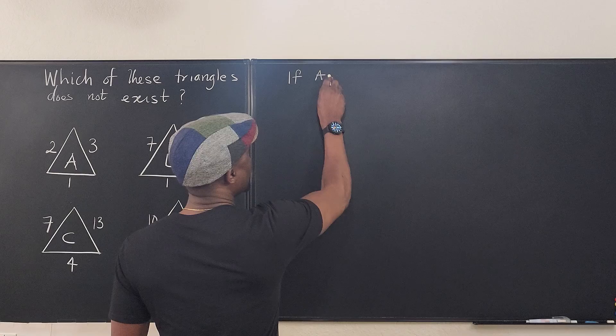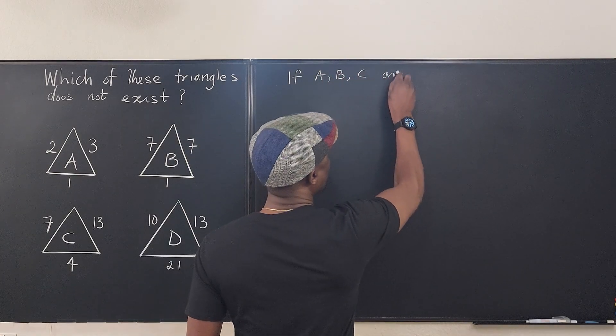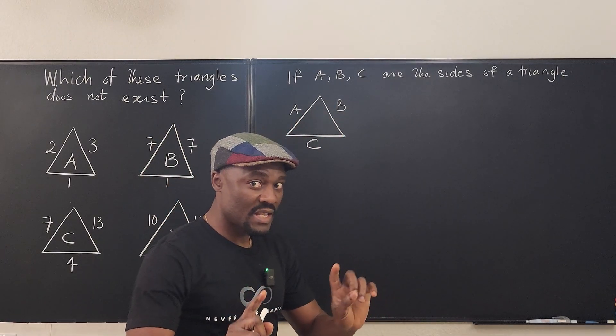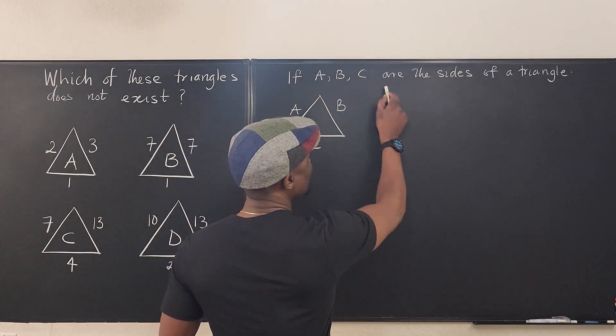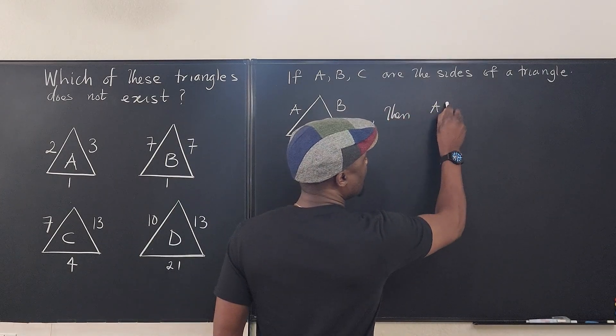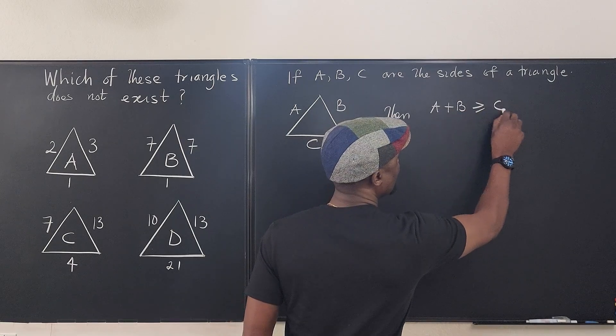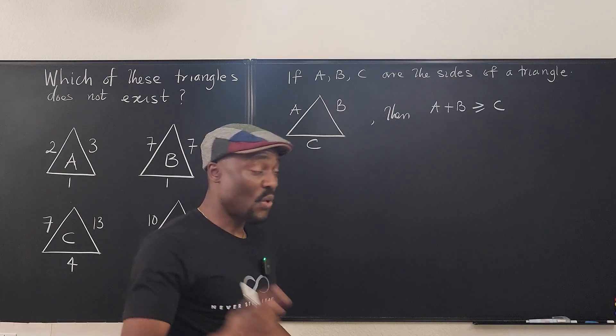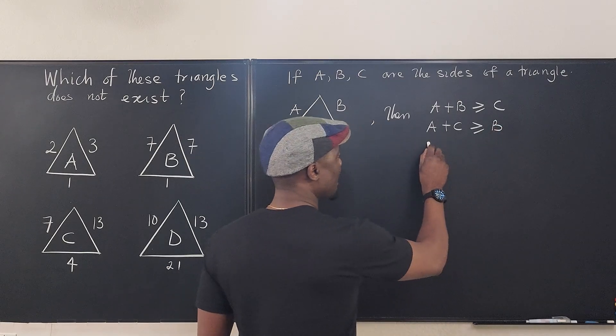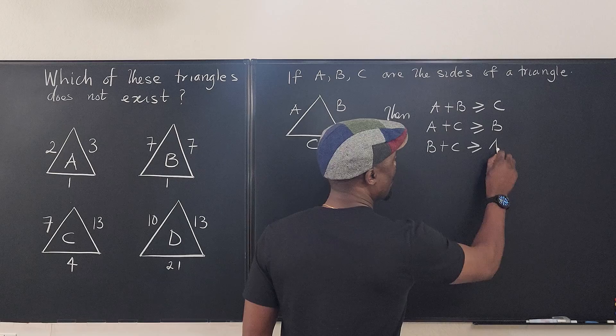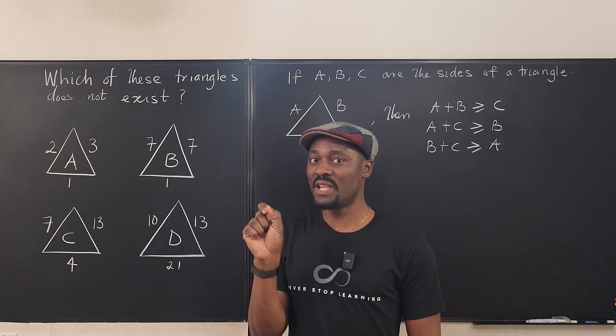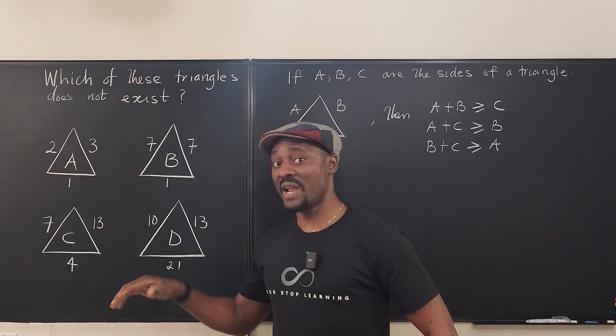If A, B, and C are the sides of a triangle, then A plus B must be greater than or equal to C. Also, A plus C must be greater than or equal to B. And thirdly, B plus C must be greater than or equal to A. So if you want to know if a triangle exists, you just have to pick any two sides, add them together, and see if it is greater than the third side.